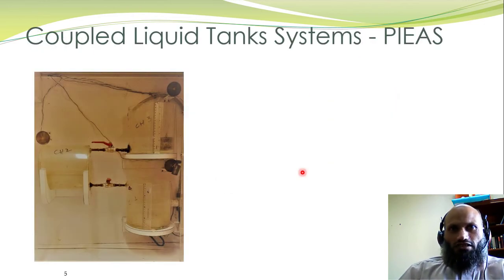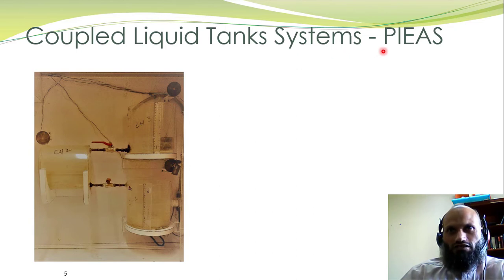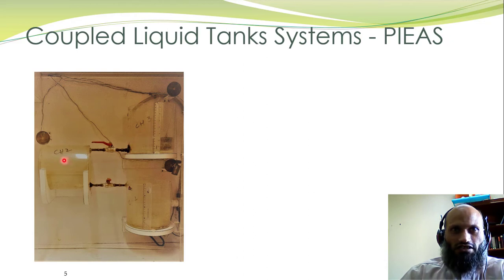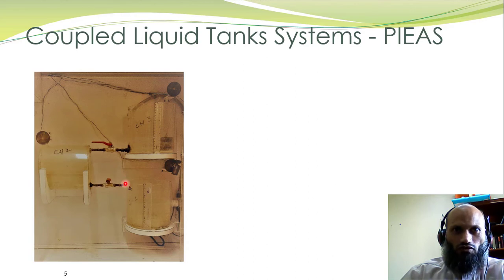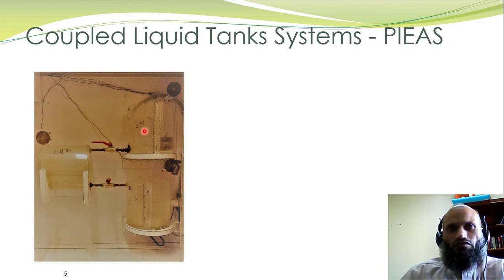Now let's talk about a more complex system — the copper liquid tank system available in our control system design lab. It consists of three cylindrical tanks, named Tank 1, Tank 2, and Tank 3. A pump at the bottom pumps fluid from Tank 1 into Tank 3. Water flows from Tank 3 into Tank 2 through a pipe by gravitational effects, and from Tank 2 into Tank 1 through another pipe. There are sensors in each tank to measure the liquid level, and we want to obtain a mathematical model for this three-tank system.